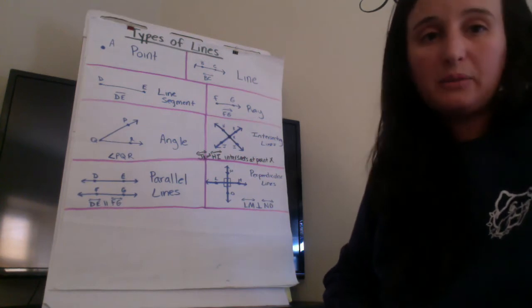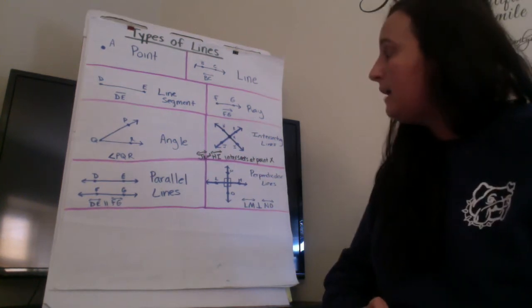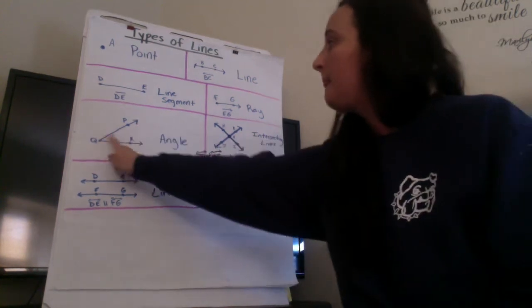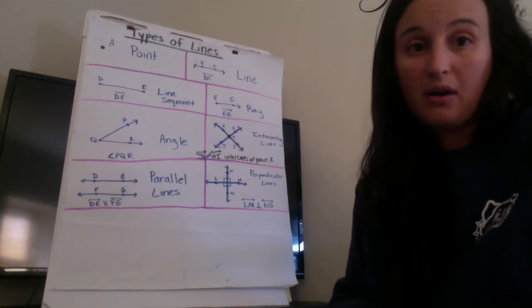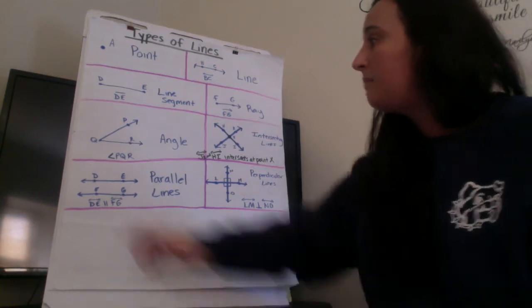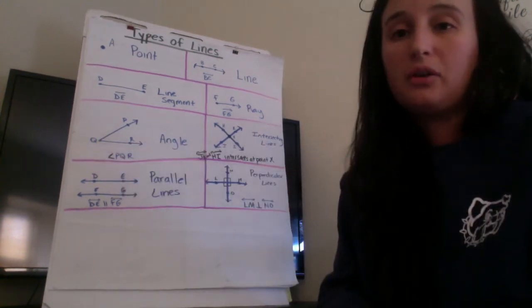We talked about what an angle is and we're going to go over the different types of angles in one second but an angle, how you would name it, is naming the points that are on that angle and it's important to remember that the middle letter should always be the middle point so that's called your vertex.